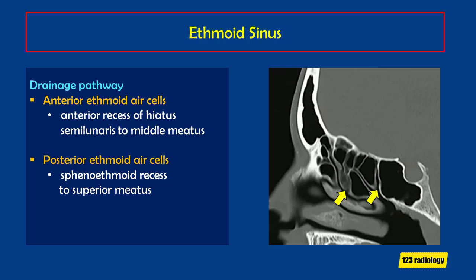The anterior ethmoid air cells drain to the middle meatus through the anterior recess of the hiatus semilunaris. The posterior ethmoid air cells drain to the superior meatus through the sphenoethmoidal recess. We can see that on sagittal images, with the middle meatus draining the anterior ethmoid air cells and the superior meatus draining the posterior ethmoid air cells.